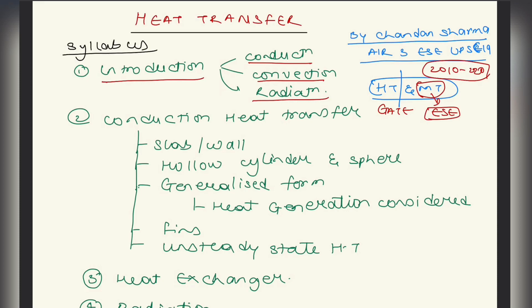Then we will go into conduction heat transfer. We will talk about heat conduction through slab and wall, then numericals on them, then hollow cylinder and sphere, then critical radius for hollow cylinder and sphere, then generalized form of heat transfer. In the generalized form, we will also discuss heat generation in the slab and cylinders, and solve some numericals on them. Then we will go into fins, which is a very important topic for GATE and Engineering Services mains.